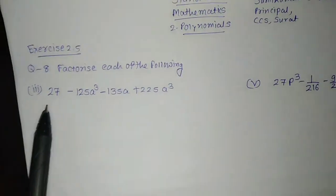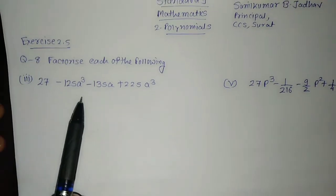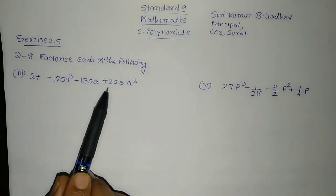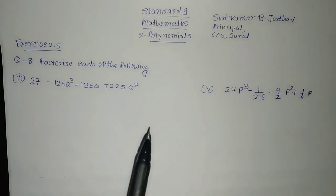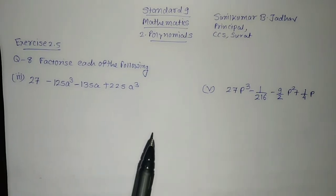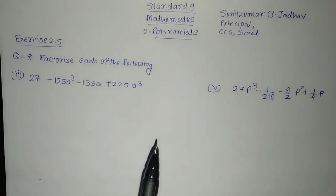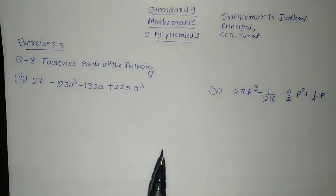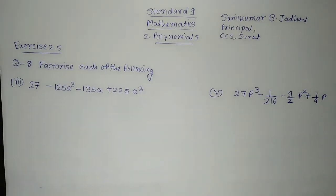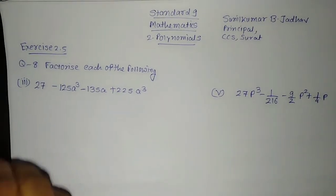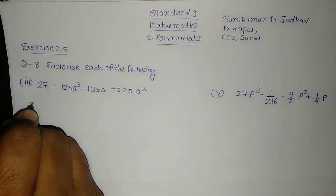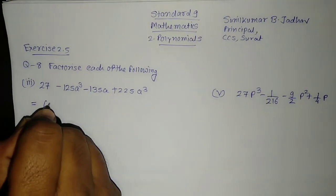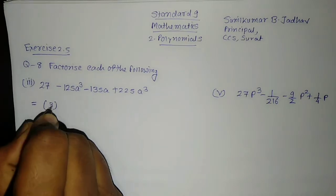Factorize each of the following. Number 1: 27 minus 125a cube minus 135a plus 225a square. We will try to convert this into factorized form. For doing that, first of all we will try to write it in the standard form, so we should write its formula. Let us begin: 27 is a cube of 3, so I will write it as 3 whole cube.